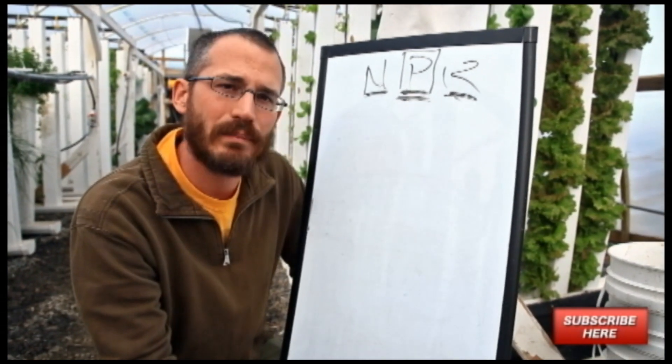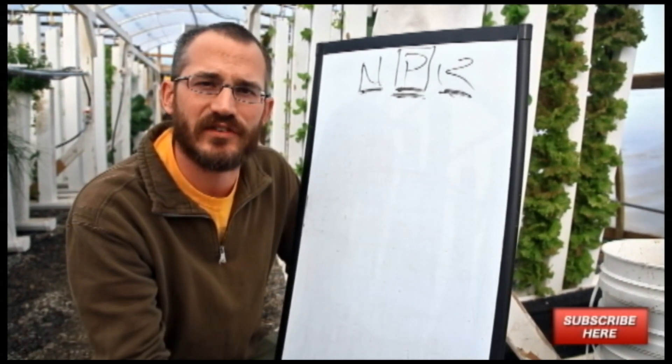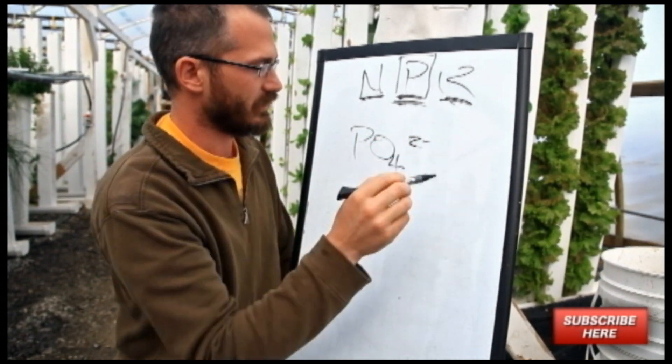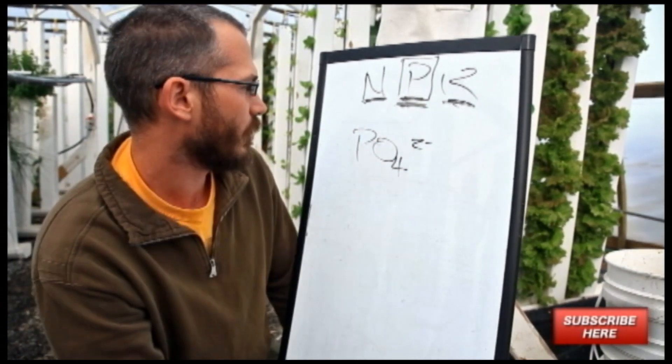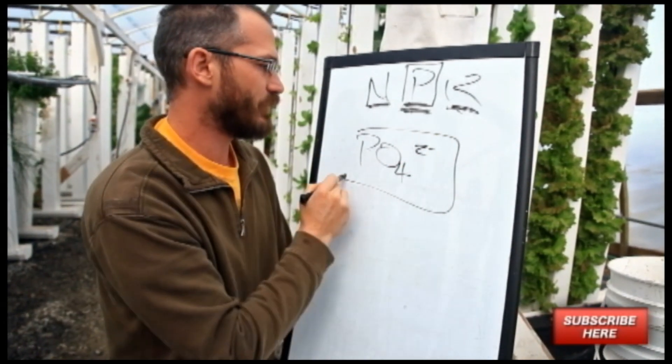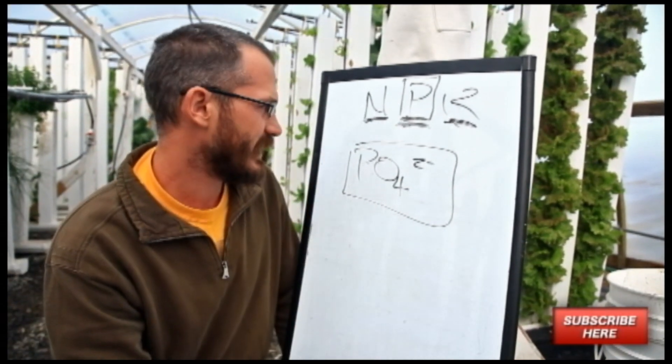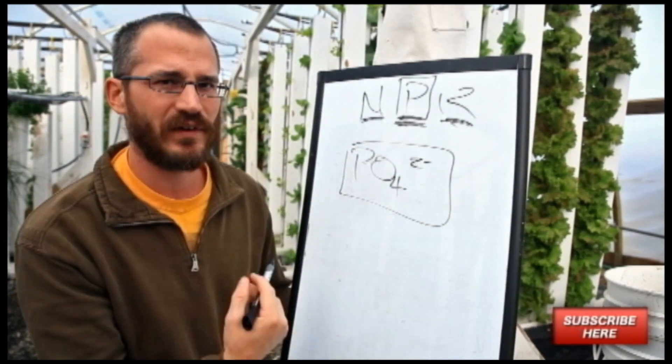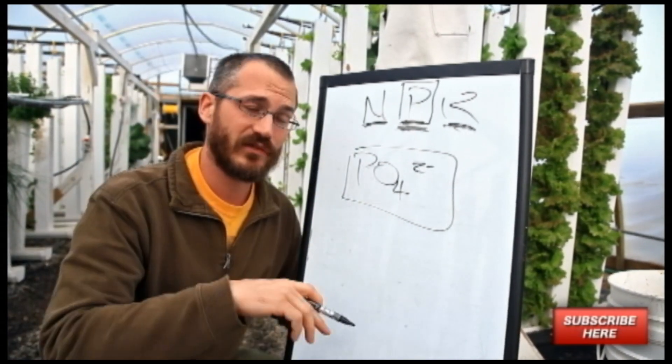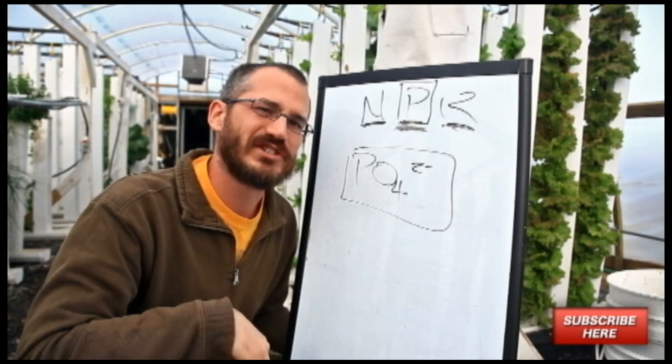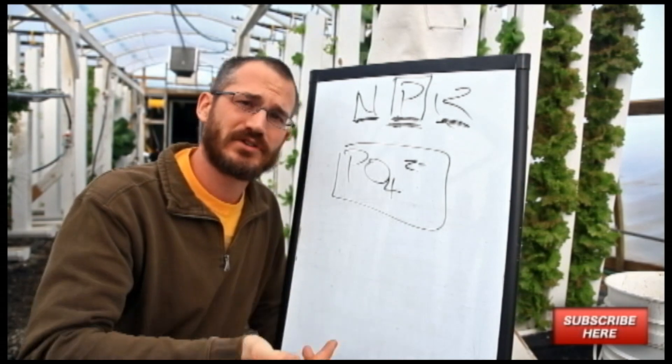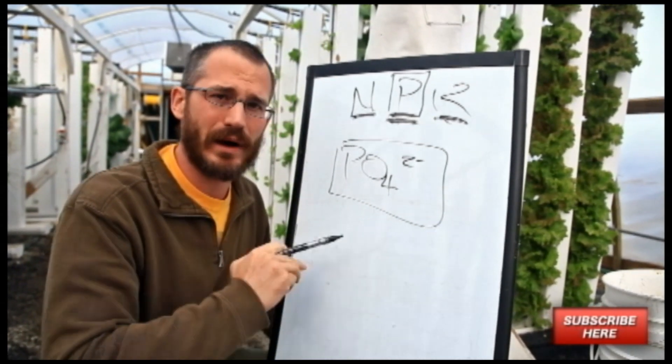So phosphorus is mostly bioavailable in the form of phosphate, PO4 2-. And this molecule floats around in solution and it is very soluble. So it dissolves very easily into solution, but it's also really desirable. A lot of algae really like phosphate. And in fact, a lot of natural ecosystems are actually limited by phosphate.